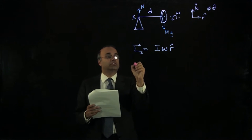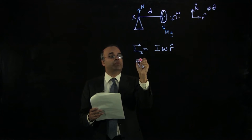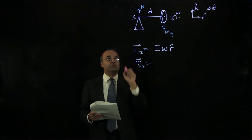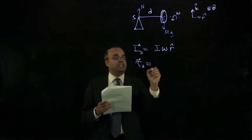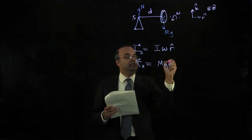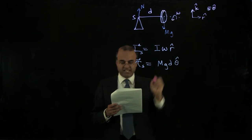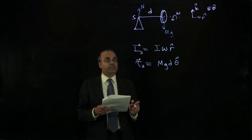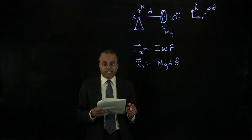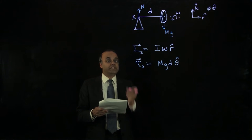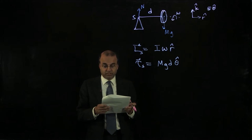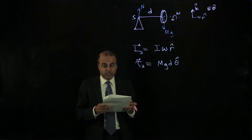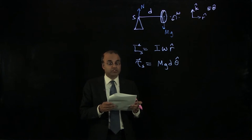The torque with respect to point S is r cross F relative to point S. That's going to be mgd in the plus theta hat direction. And for a fast omega — if omega is a large angular speed and therefore the angular momentum vector is a large vector — then the torque, which acts perpendicular to the angular momentum, will cause the angular momentum vector to rotate.